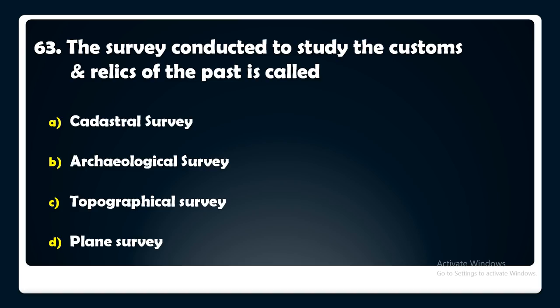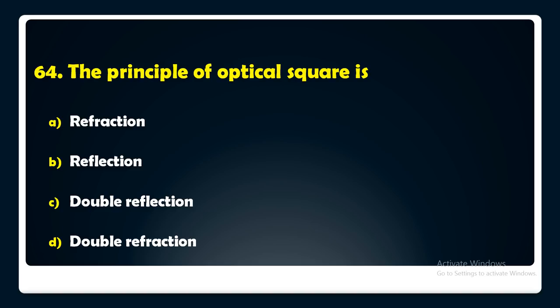The principle of an optical square is — refraction, reflection, double reflection, or double refraction? The answer is: the principle of an optical square is double reflection.